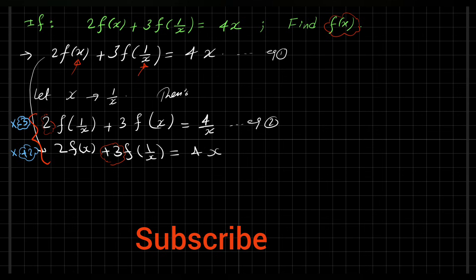So the new equations are: we have for this one -6f(1/x) - 9f(x) = -12/x.